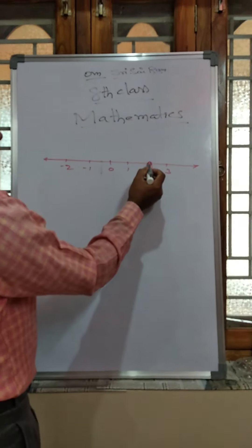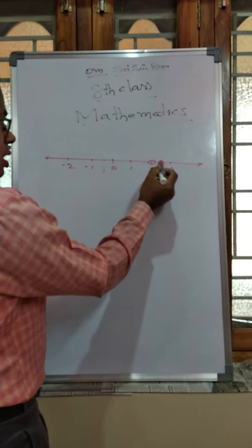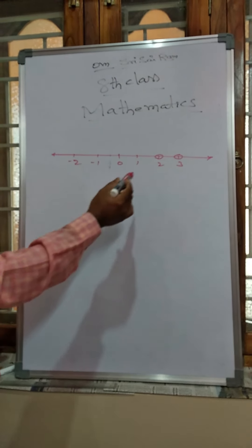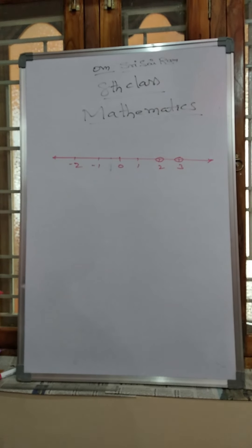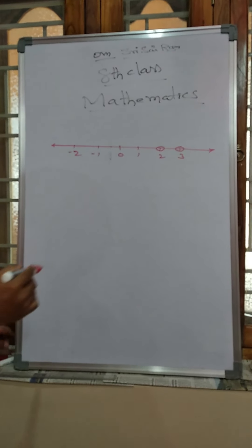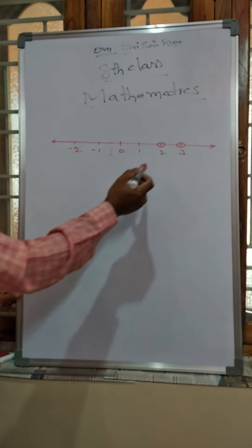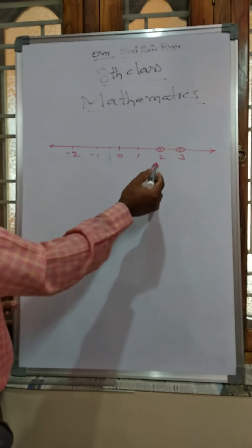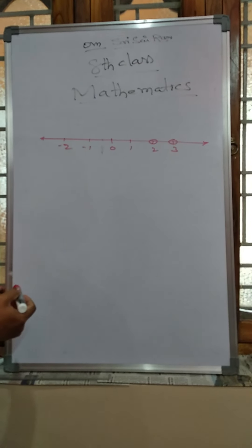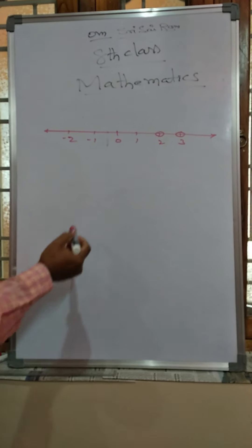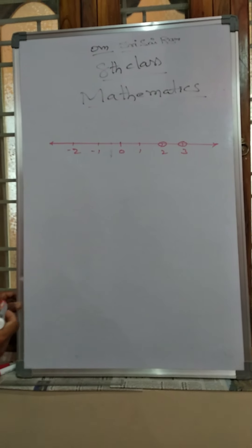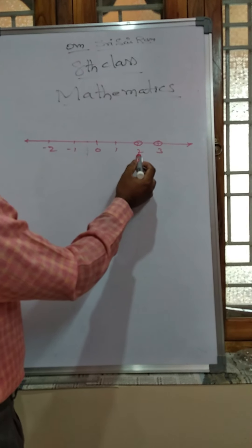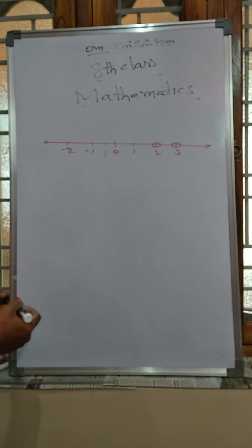How many natural numbers are between 2 and 3? Yes, you are right — there are no natural numbers between 2 and 3. How many whole numbers between 2 and 3? Yes, there are no whole numbers between 2 and 3. How many integers between 2 and 3? Yes, there are no integers between 2 and 3.